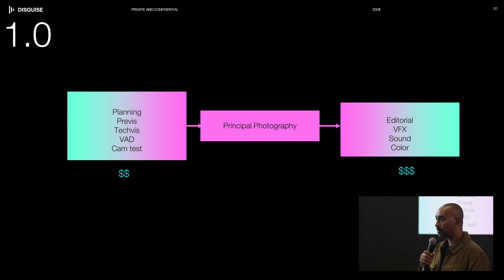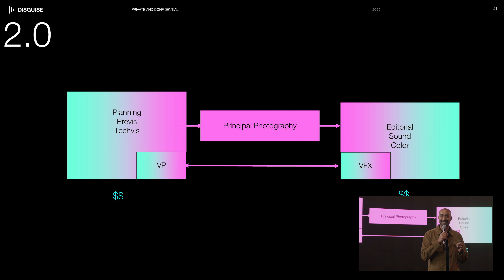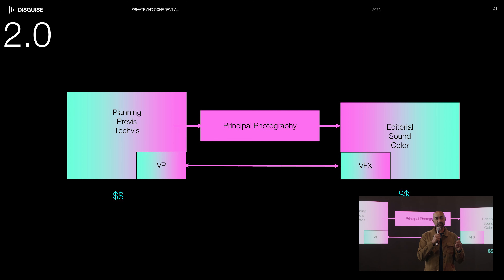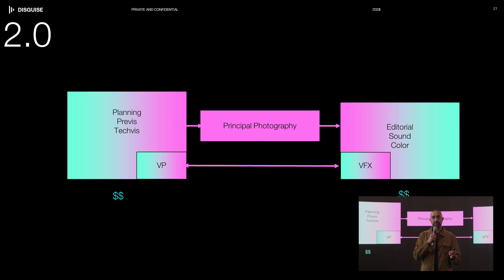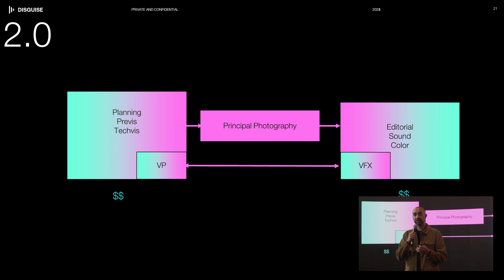For VP 2.0, what is actually happening is a trend where the VFX department and the virtual production department are working together before and even after the show. During pre-production, the VFX team works very closely with the virtual production team to build assets and make sure those assets are of the same quality and caliber as those used in post. After the shoot, the VFX team has continuity and knows exactly where those assets are. This, I think, is more VP 2.0.